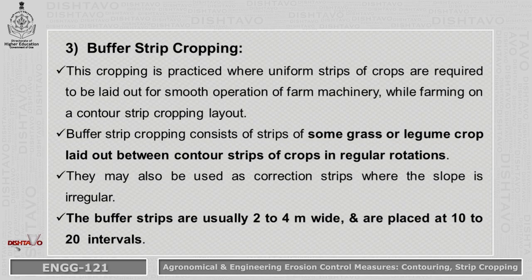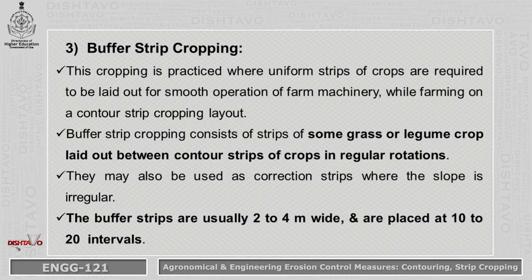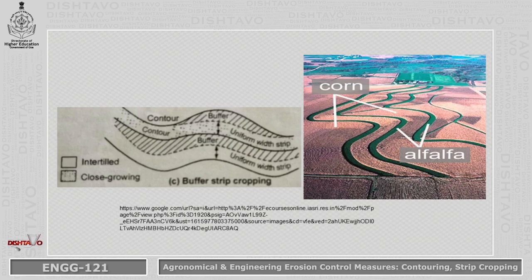The third type is Buffer Strip Cropping. This is practiced where uniform strips of crops are required for smooth operation of farm machinery in a contour strip cropping layout. Buffer Strip Cropping consists of strips of grasses or legume crops laid out between contour strips of crops in regular rotations. They may be used as correction strips where the slope is irregular. Buffer strips are usually 2 to 4 meters wide and placed at 10 to 20 meter intervals.